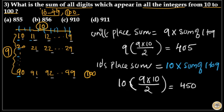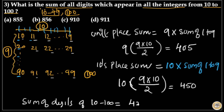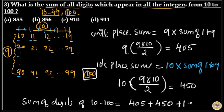Therefore, the sum of digits of all integers from 10 to 100 equals the unit place sum plus the tens place sum plus the sum of digits of 100: 405 + 450 + 1 = 856. So option B is your answer.